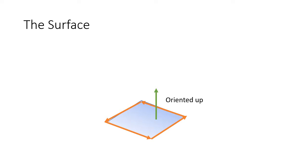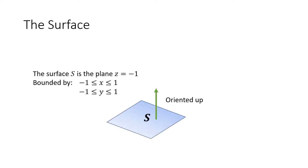We need to make sure it's oriented — that's a big part of Stokes' Theorem, knowing the orientation. And it's definitely oriented up. We're moving around with our orientation. You get that little guy walking: the inside of the surface is going to be on his left as he walks around the path in the direction of the arrows, and his head would definitely be up. So it turns out my surface S is really just this plane, z equals negative one, bounded by negative one ≤ x ≤ one and negative one ≤ y ≤ one.